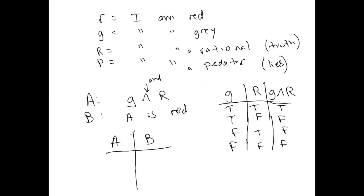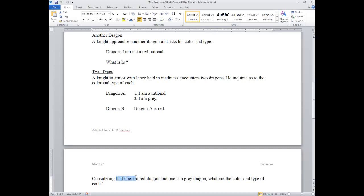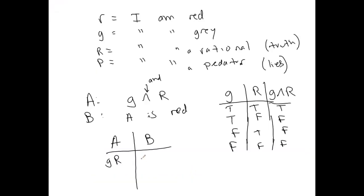If A is in fact a rational dragon, he must be a gray rational. He cannot be a red rational because that would be a lie — he said he's gray rational, so it's impossible for him to be red rational. If A is gray rational, that means B would have to be a red dragon. And since B claims A is red but that is untrue, that would make B a predator.